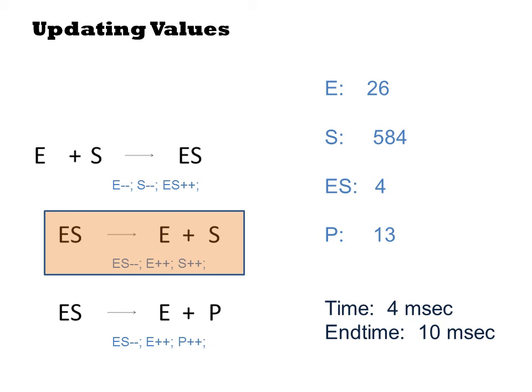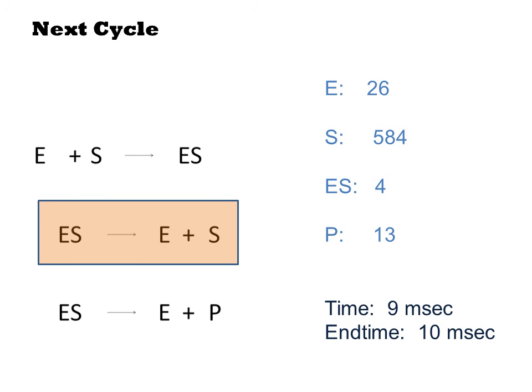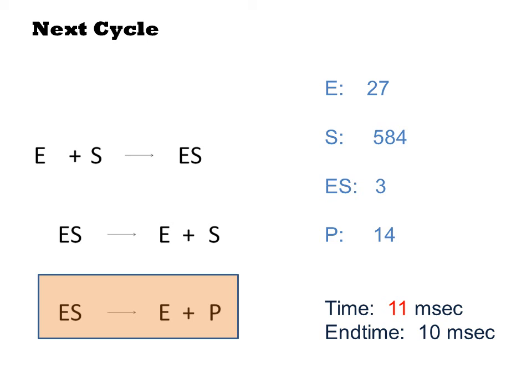In the next step, I do it all again. So let's say it chooses to do an E plus S to ES reaction. Then I update my values as negative E, negative S, and plus for ES. And perhaps the next time was 2 milliseconds, so now we're at 6 milliseconds. Then perhaps it does another dissociation of ES complex, and that gets up to 9 milliseconds. Then it does an ES over to E plus P step, and we exceed 10 milliseconds, so the algorithm stops.